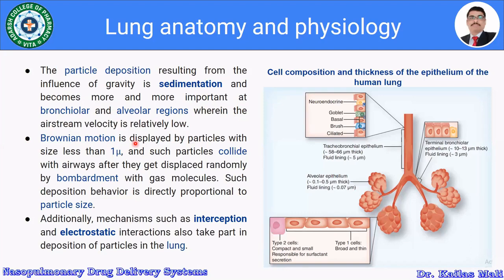Brownian motion is exhibited by particles with a size less than 1 micrometer. Such particles collide with the airway after being randomly displaced by bombardment with gas molecules, and this deposition behavior is directly proportional to particle size. Additionally, interception and electrostatic interactions are also mechanisms involved in particle deposition into the lung. In summary, there are three main deposition mechanisms: sedimentation, interception, and electrostatic interaction, along with Brownian motion.